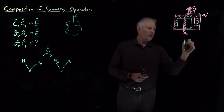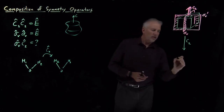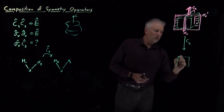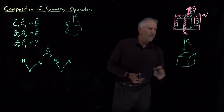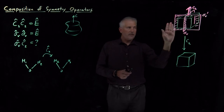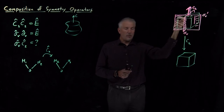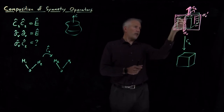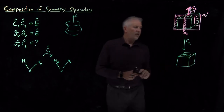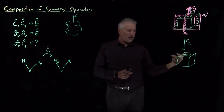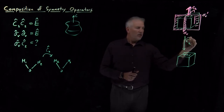Now let's consider what happens to the cube with T-O-P on top as we perform each symmetry operation. First, the C2 operation: rotating the cube by 180 degrees still produces a cube, but the right face rotates to the left, the front face rotates to the back, and the top face stays on top — but the letters are now rotated by 180 degrees. So the writing on top ends up upside-down and reversed.